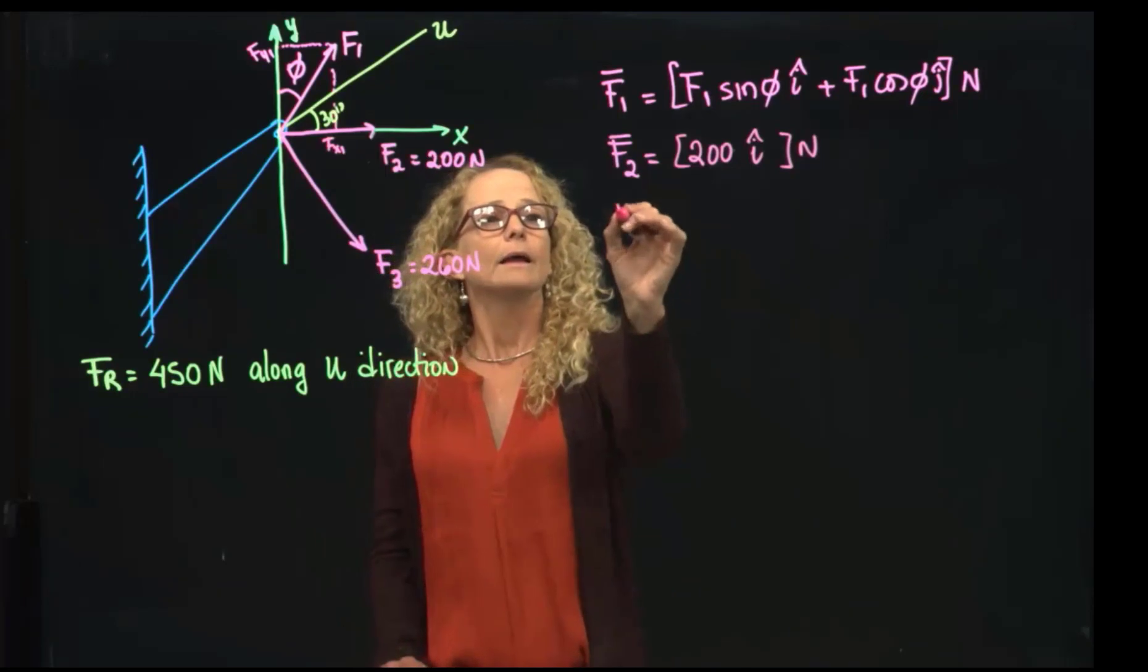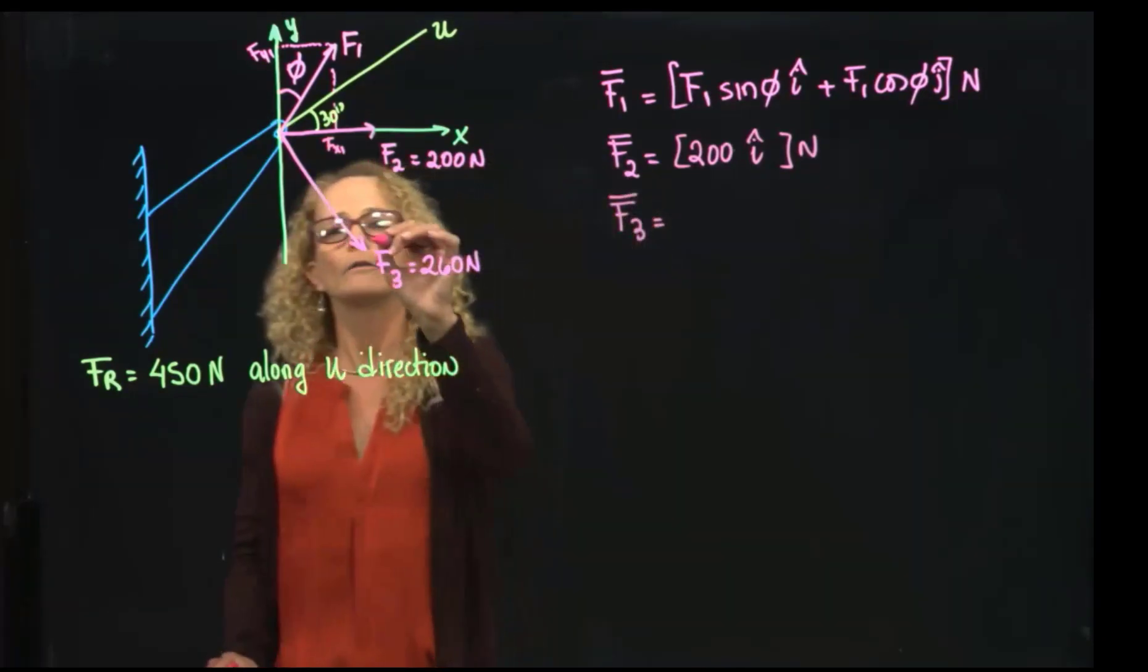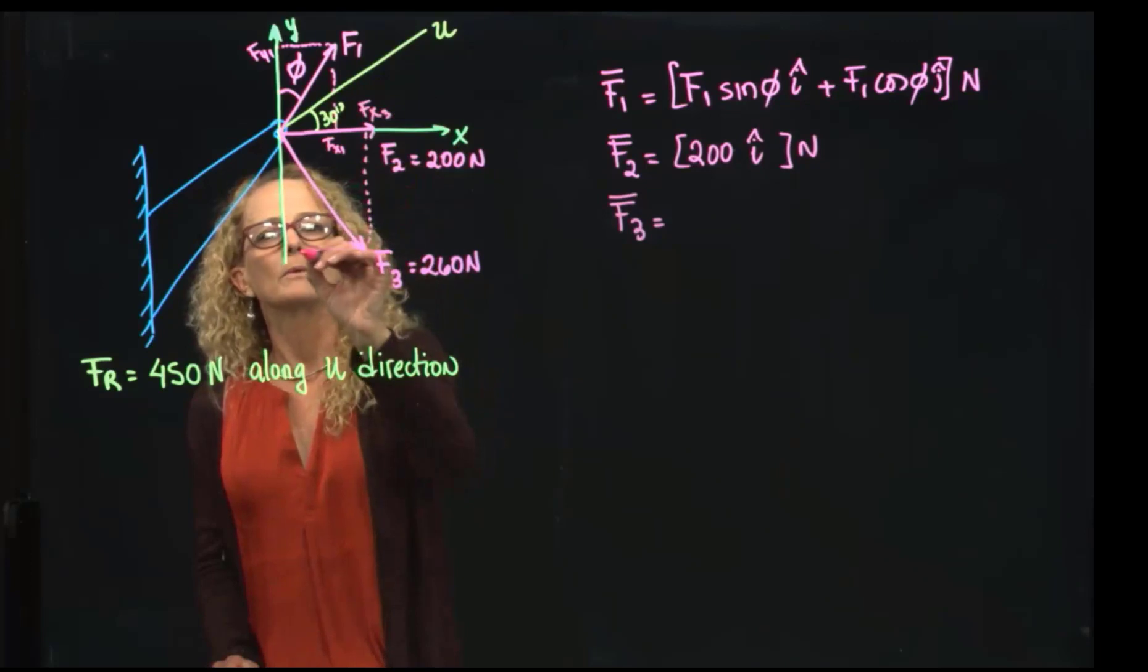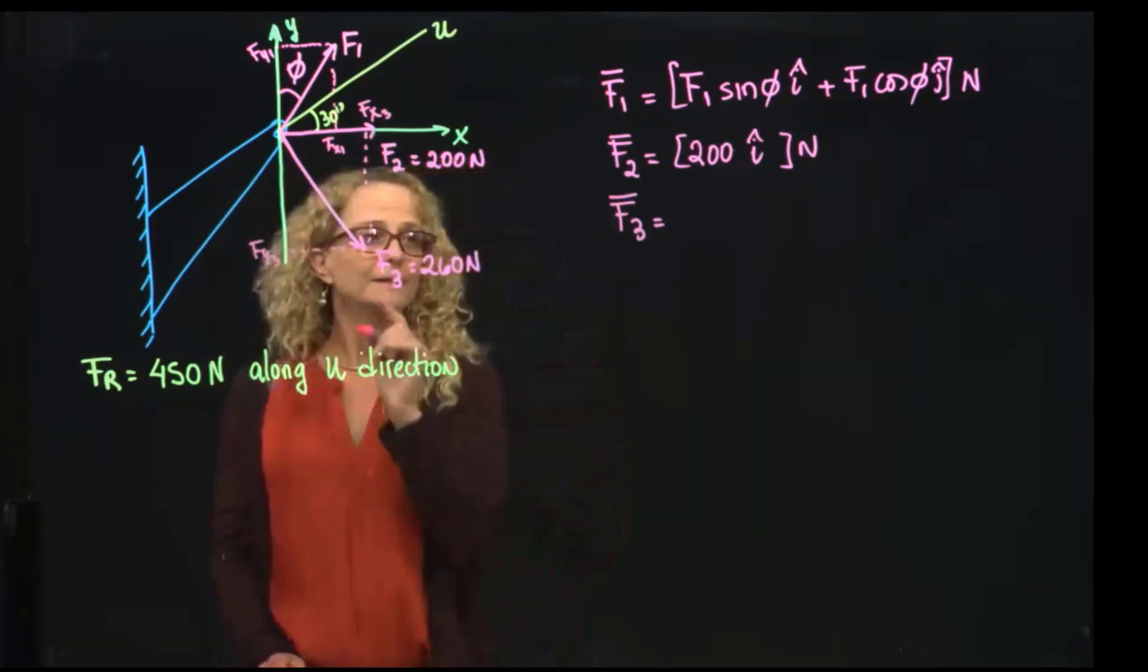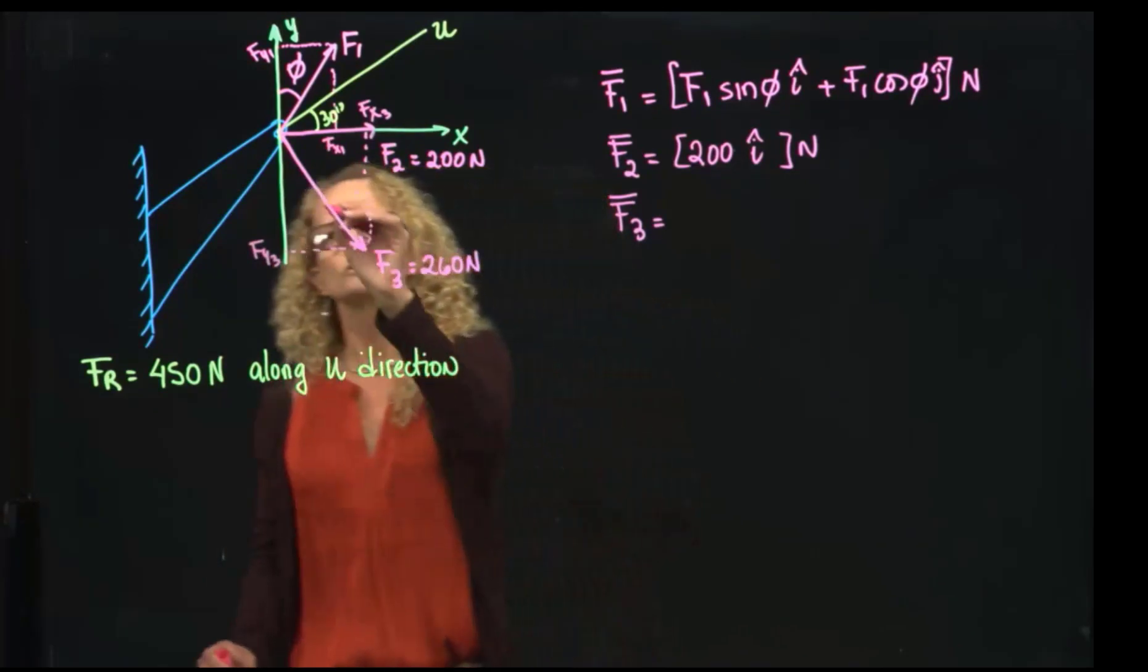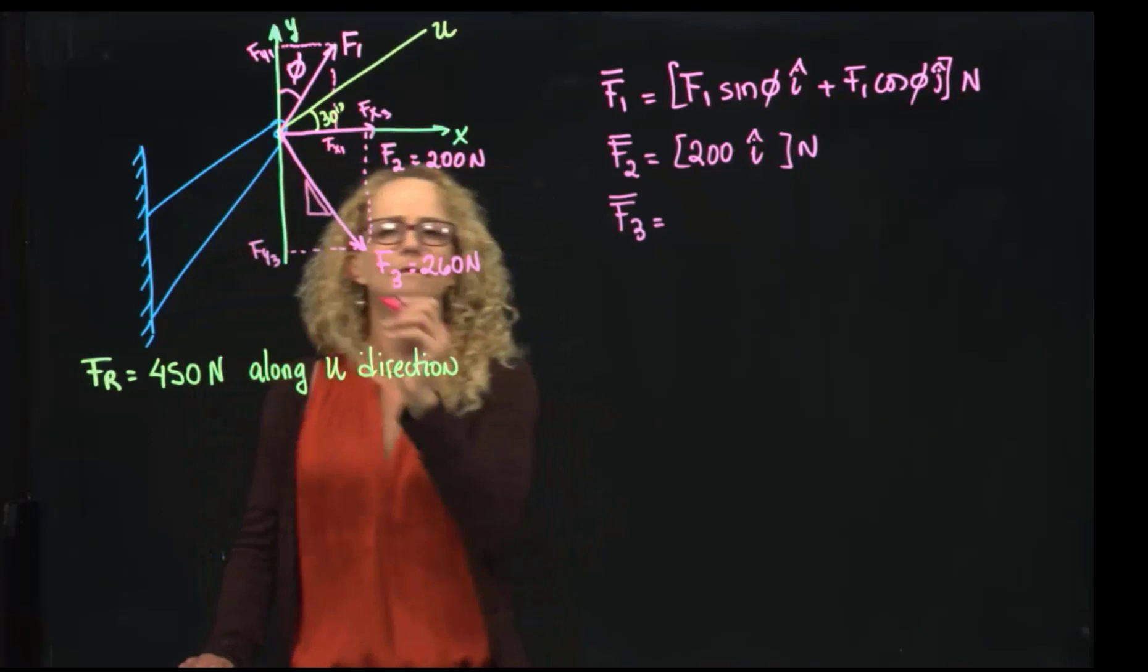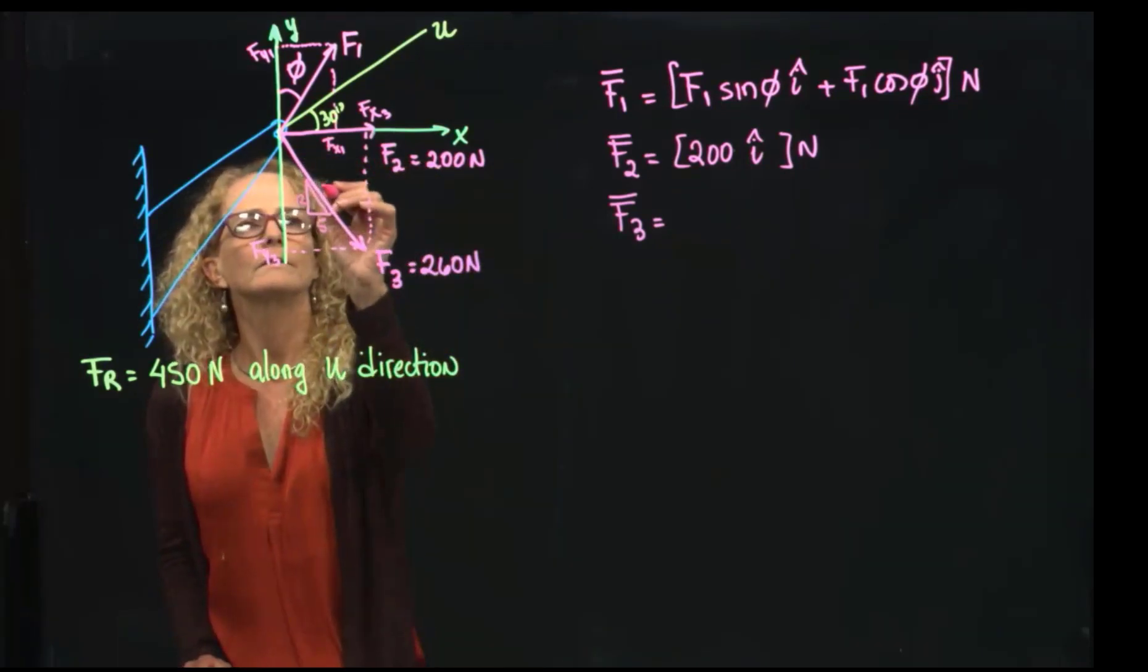And then F3 as a vector will have two components, the x-component and the y-component. The x-component, this angle is given. As you see the figure in the slide, this angle is given. This is 5, and this is 12, and this is 13.